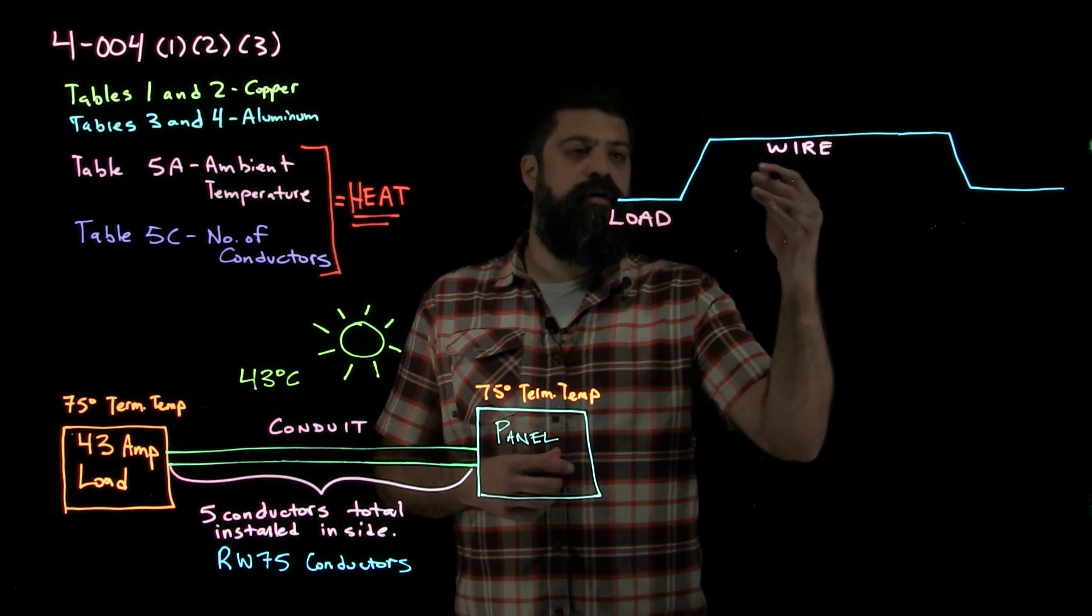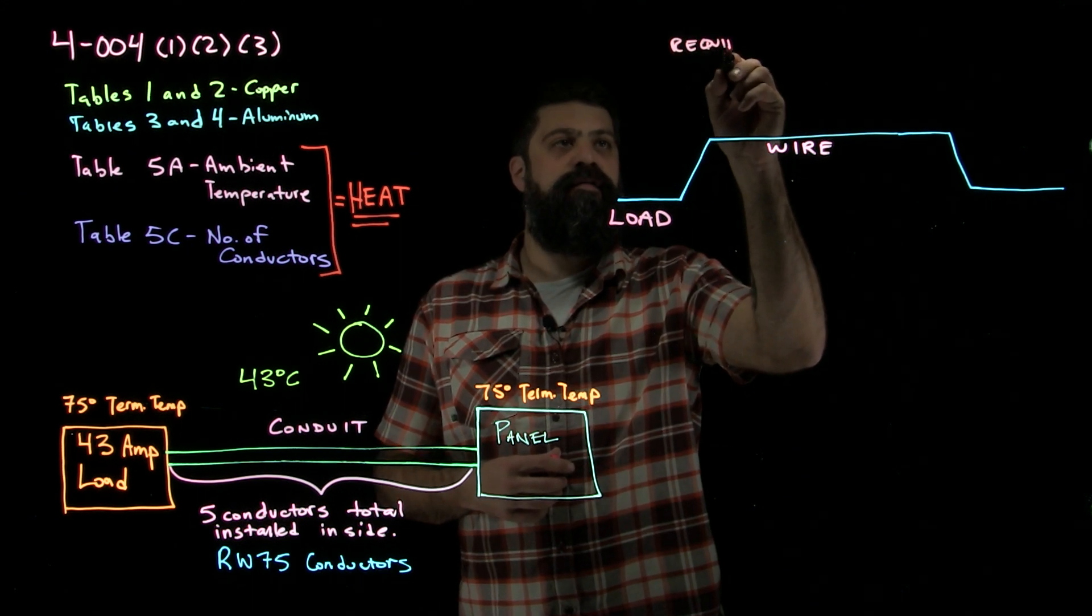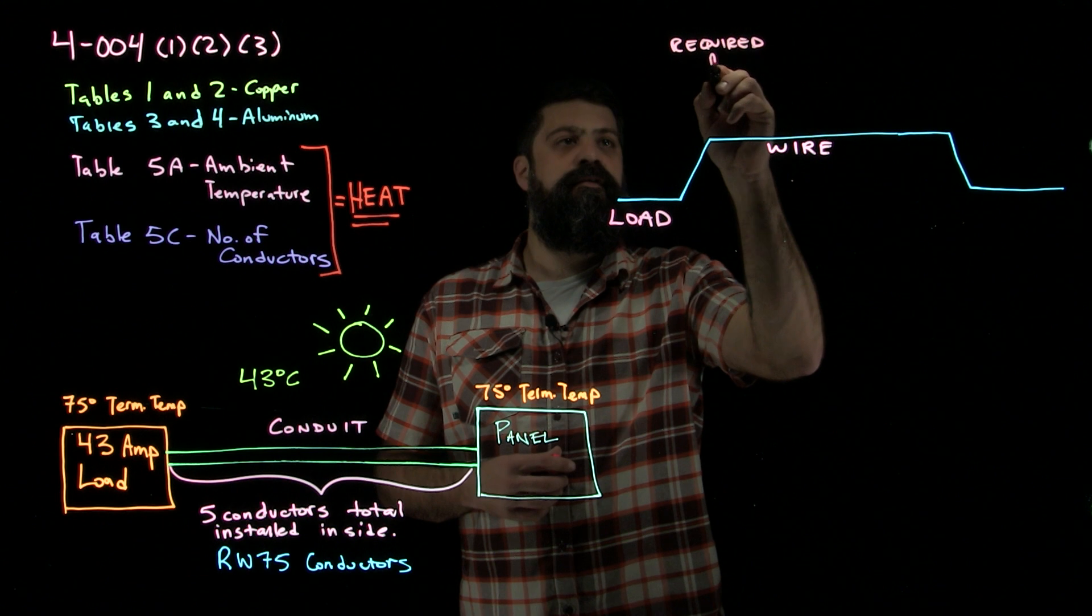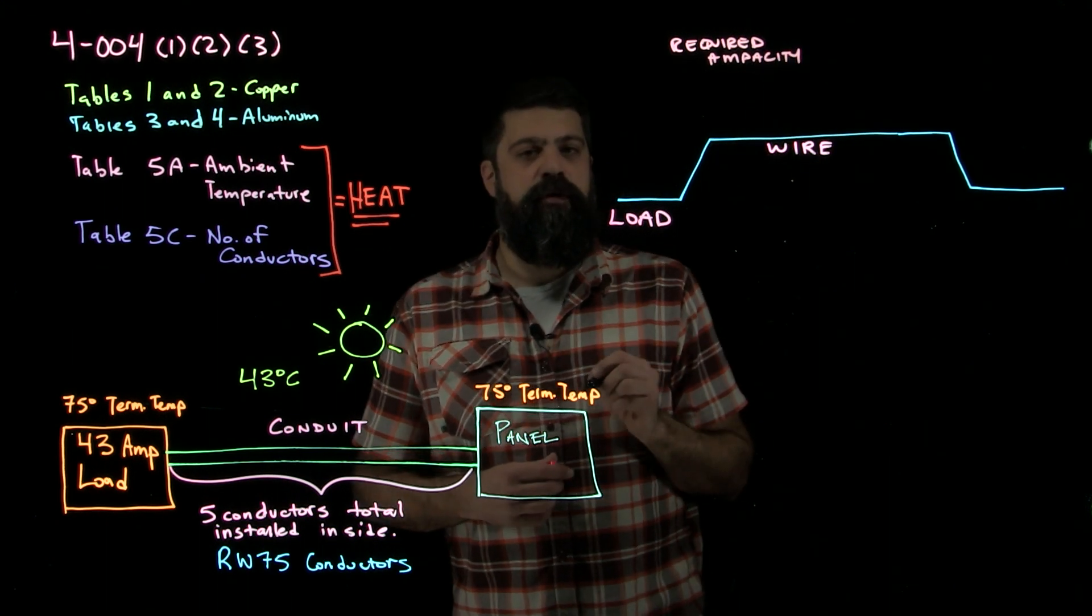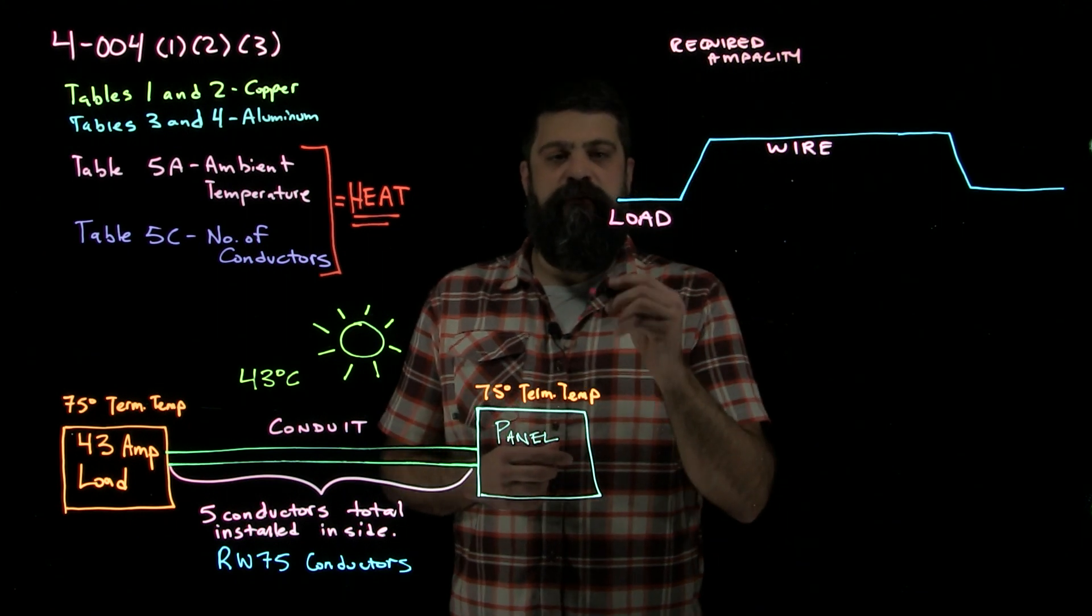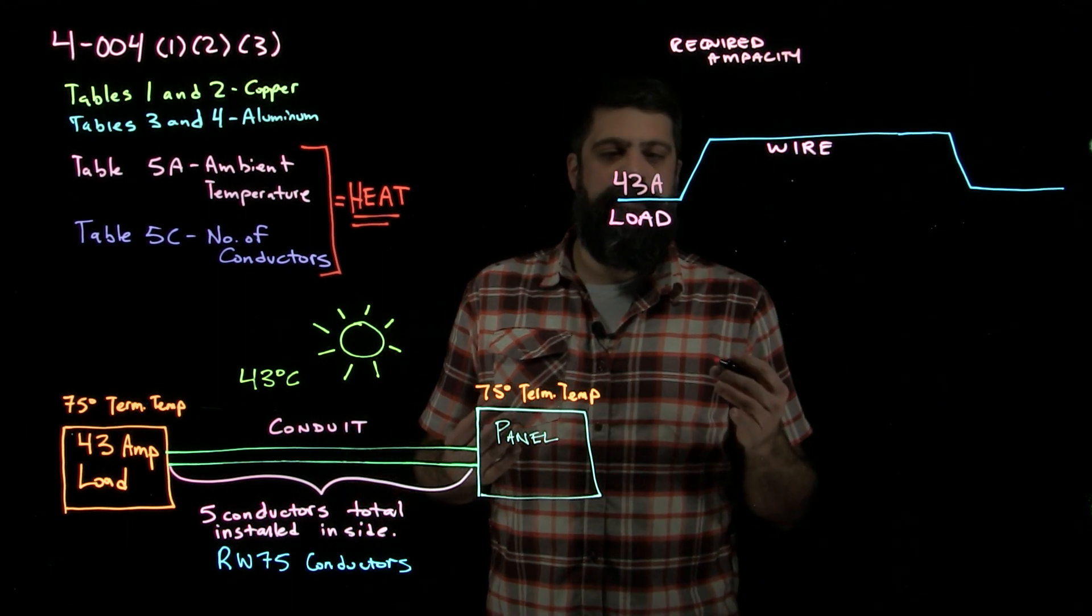From our load, we need to figure out what is the required ampacity of the wire that we're going to run from point A to point B. So in order to do that, we know we have a 43 amp load. So we can start there.